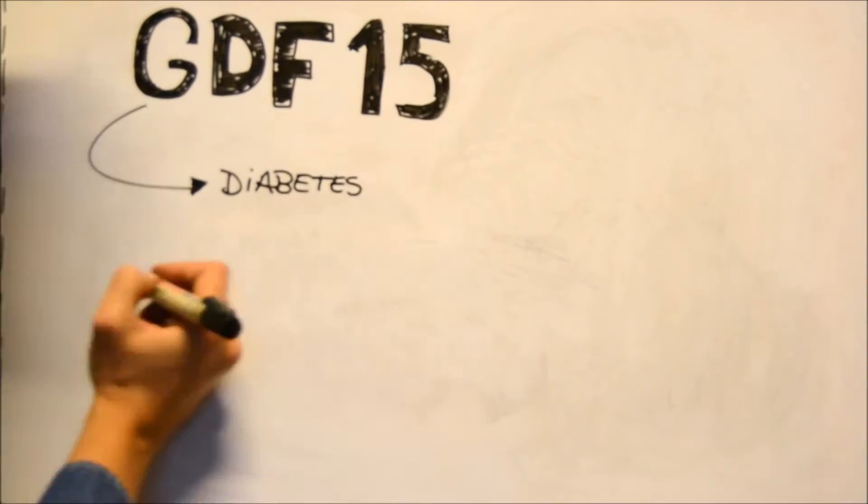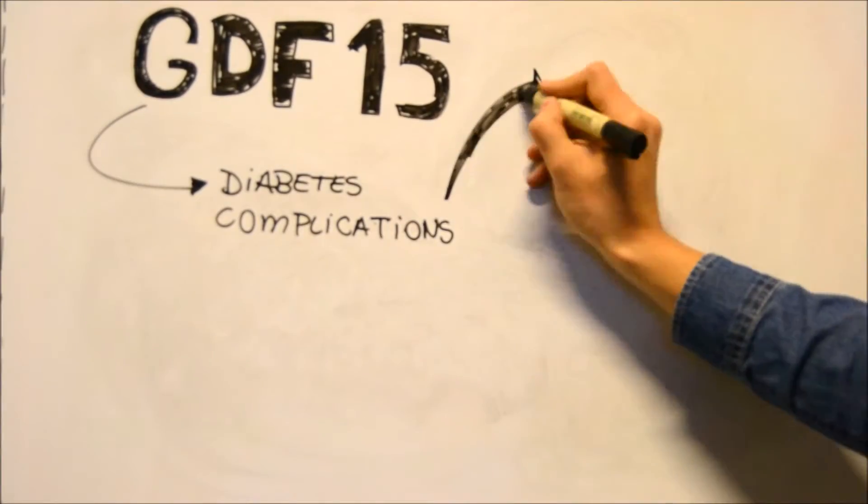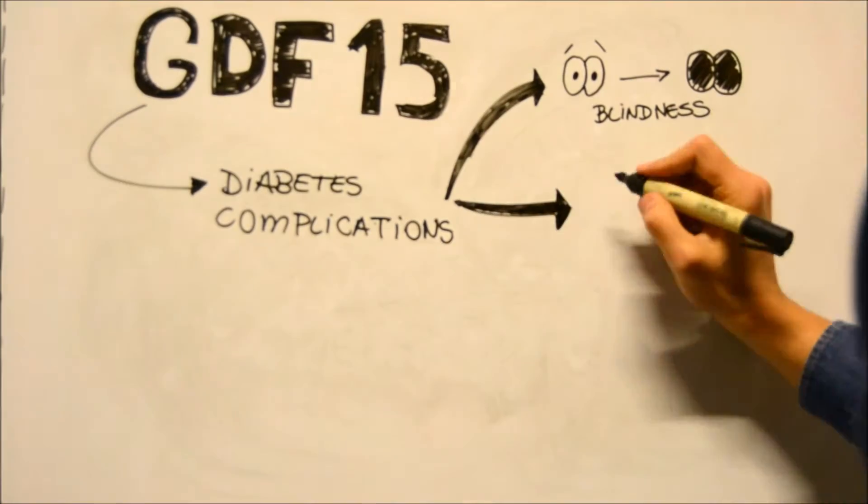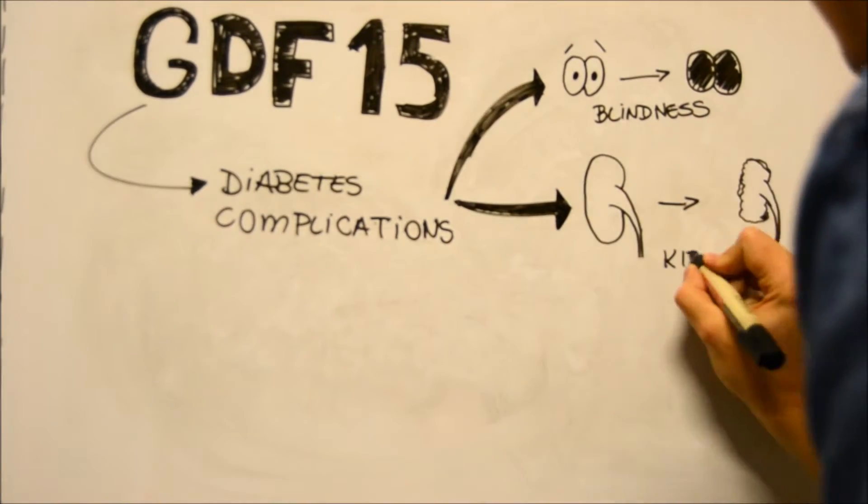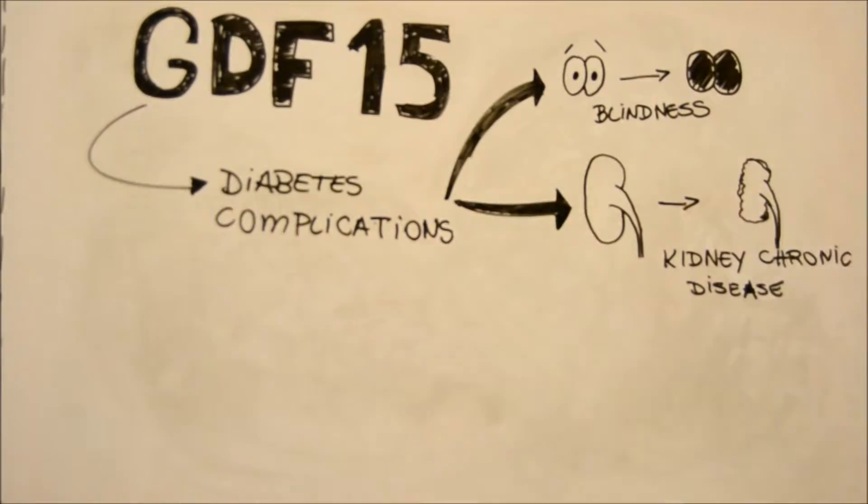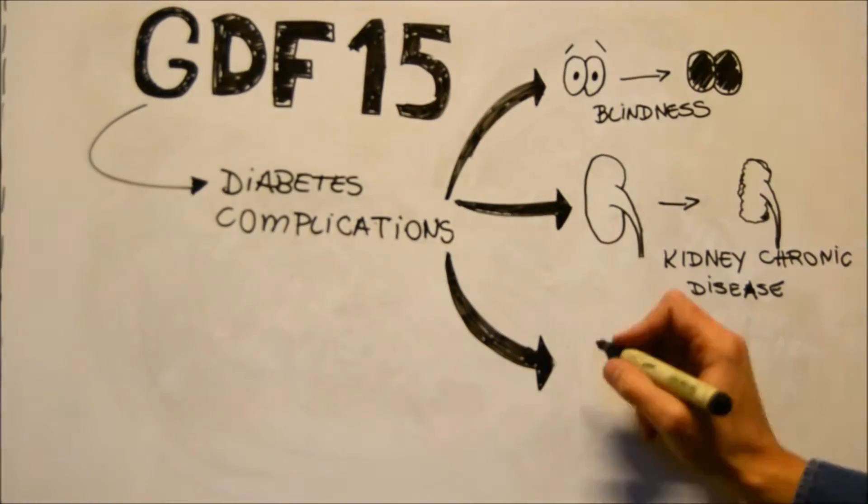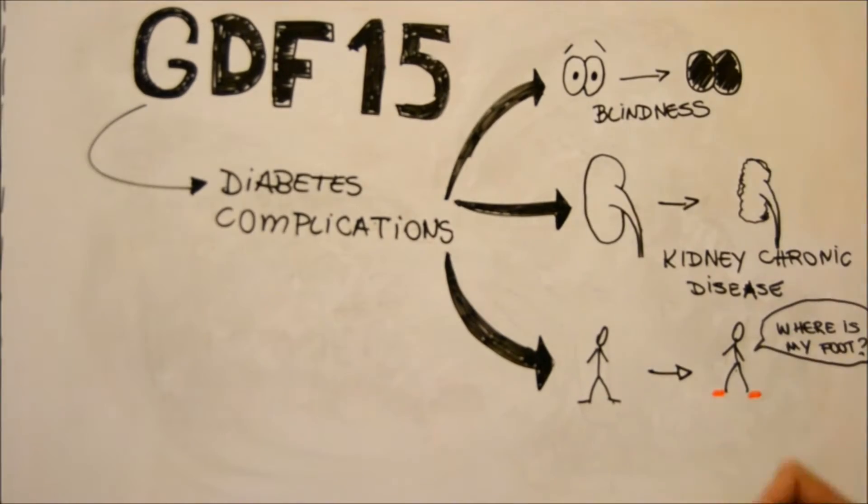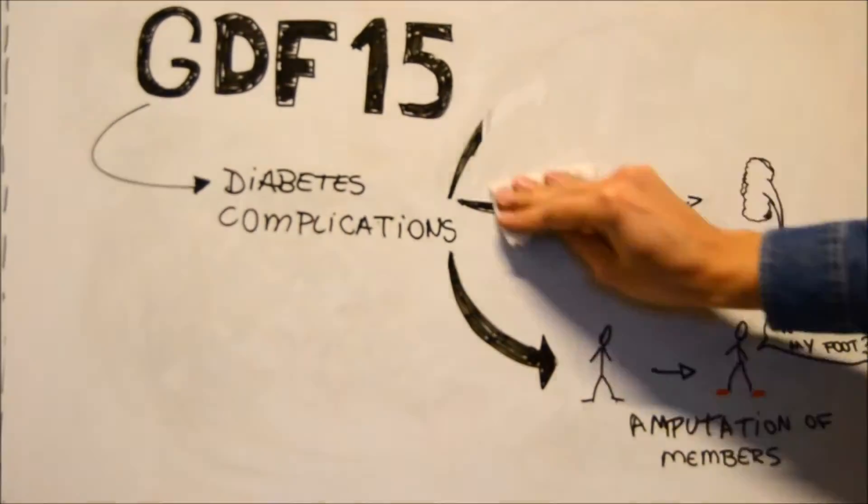GDF is also important within the diabetes context. Diabetes has severe complications - for instance, it can cause blindness, kidney chronic disease where filtration is impaired, and it is the most common cause of dialysis in the world. Also, many patients with diabetes present with poor peripheral circulation, leading to amputation of members, especially the foot.